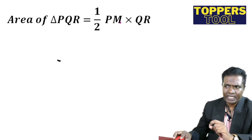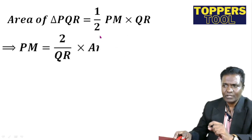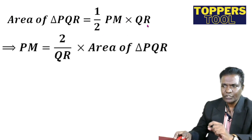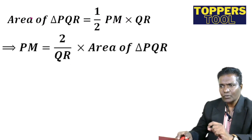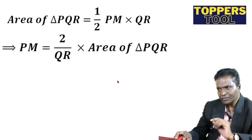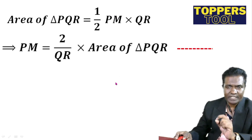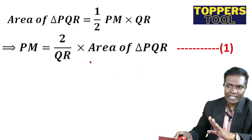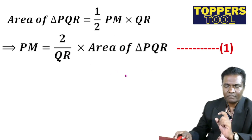From the area equation, PM is equal to 2 times area of triangle PQR divided by QR. This is equation one. We are going to substitute PM using this relationship and find QR separately.